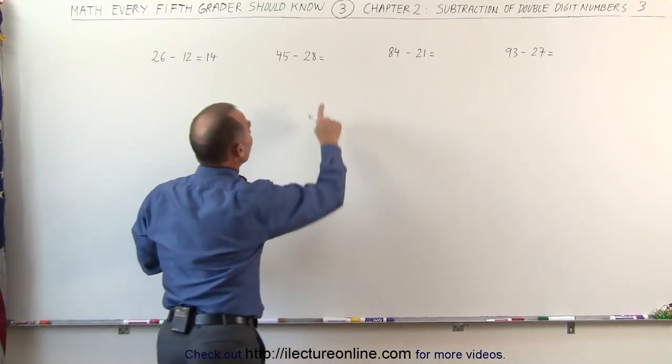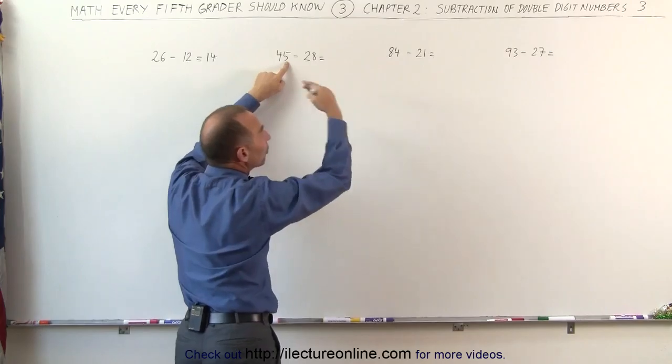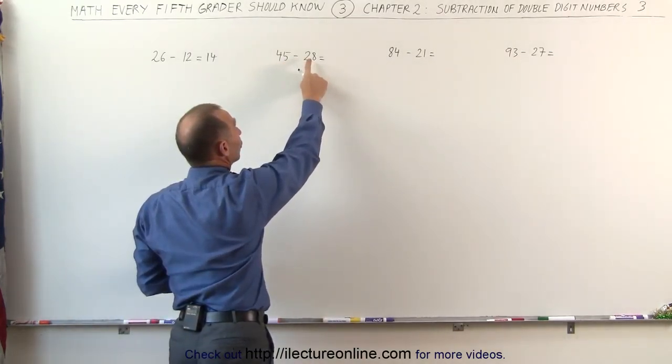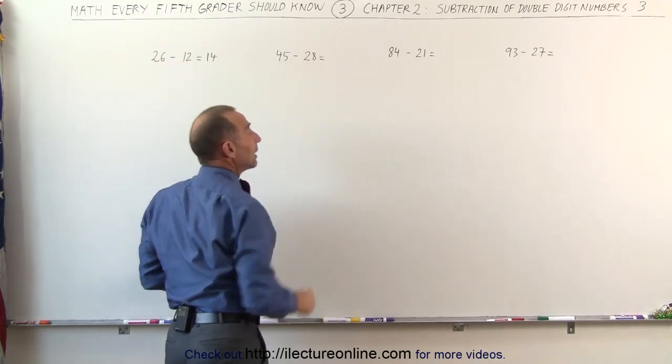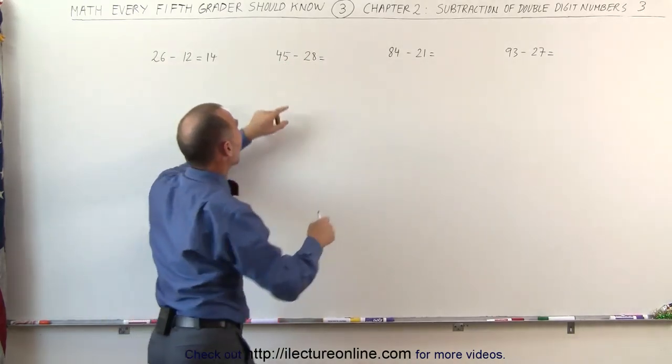But if you have a situation where the second number here, the 8, is bigger than the number 5 here, it makes it more difficult to subtract. What I do instead then is I add 2 more to that and I subtract 30 from 45 instead of 28. I'm subtracting 2 more from the answer or from the original number.